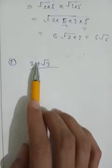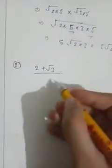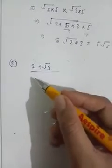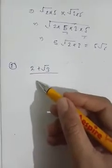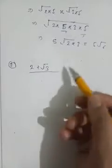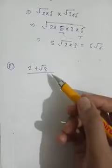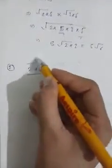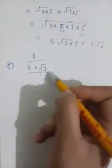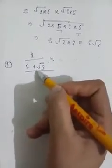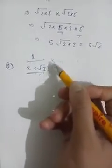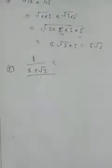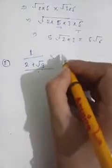Now take another question. In this question we have to find the rationalization factor. When we have an irrational fraction, we convert the denominator to rational form — that is the rationalization process. We multiply by some irrational number so that the denominator becomes rational; that number is called the rationalization factor.